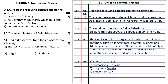Question A2: the Delhi Metro is the largest and the busiest metro in India and the world's ninth largest metro system in length and 16th largest in ridership. The network consists of eight colour-coded regular lines with a total length of 317 kilometres serving line and interchange stations.